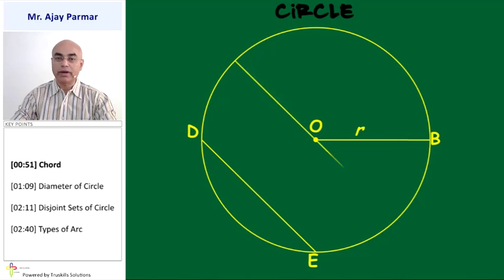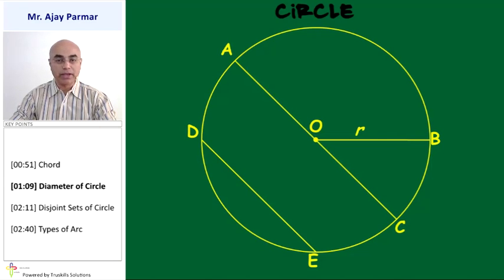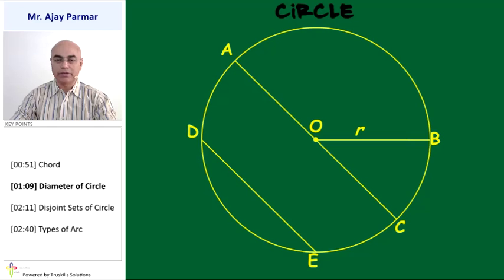But if the chord is passing through the center, that means it is the biggest chord of the circle, then that will be referred to as the diameter of the circle. Here, line segment AC passing through the center O, and therefore line segment AC is the diameter of the circle.